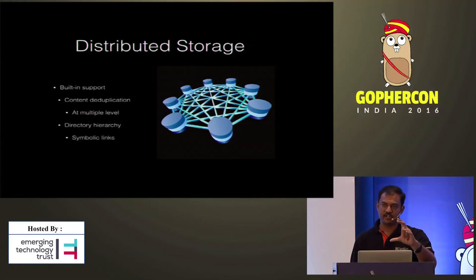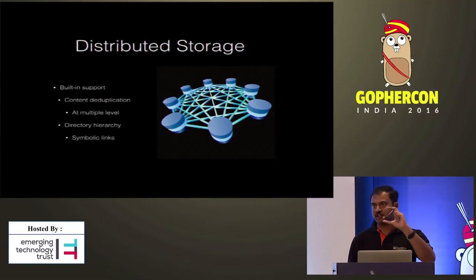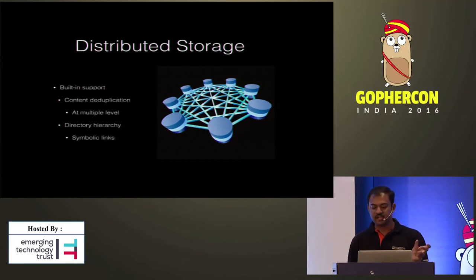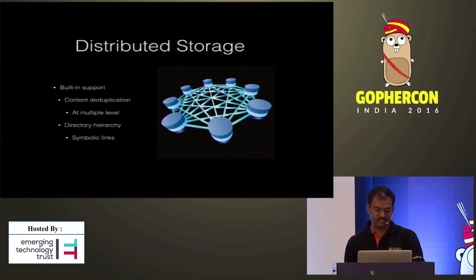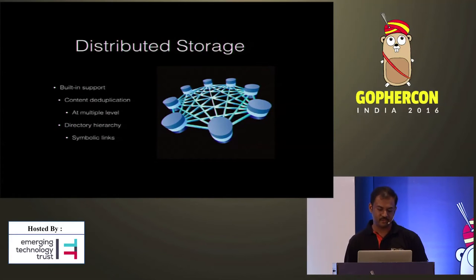Deduplication also happens within the content level. If there is one portion of data or a chunk repeated within the content, it will be stored only once. They are not stored multiple times — only the reference to that chunk is stored within the content.